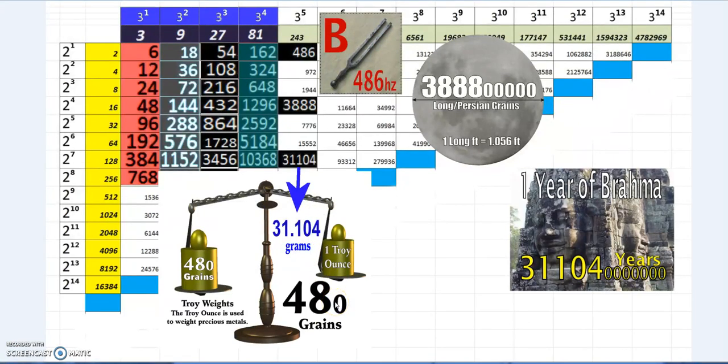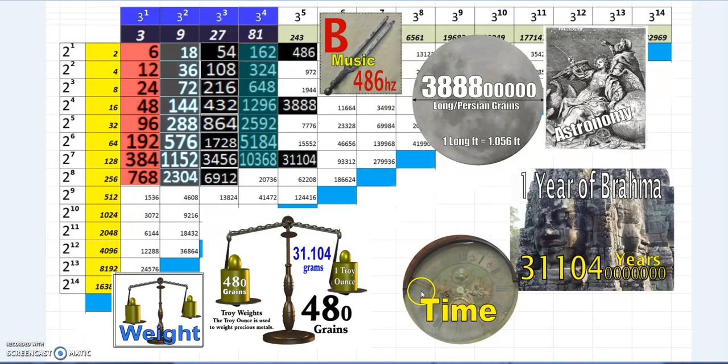If you can measure to five ten-thousandths of a gram, you're doing really well. If you quoted 31.104 grams on any scale, you're doing fantastic in terms of calibrating your equipment. We have the same themes: weight, measurements of time, astronomy, and music. These all tie in together.